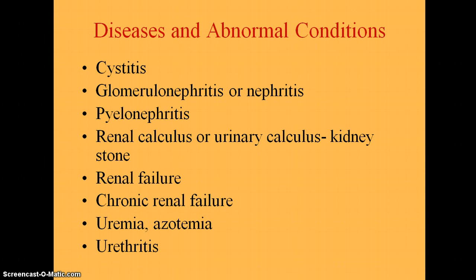C-Y-S-T-O is the prefix or root word that means bladder. So cystitis is an inflammation of the bladder, and it's usually caused by pathogens or germs that enter the urinary meatus, which is the external opening of the urethra to the outside. It's more common in females because we have a shorter urethra — only about an inch and a half long.